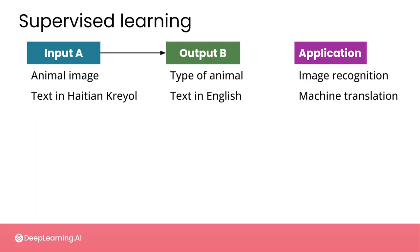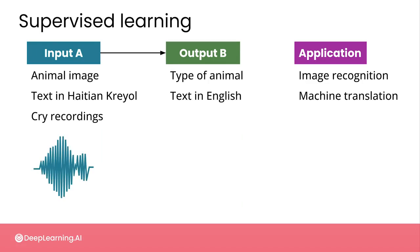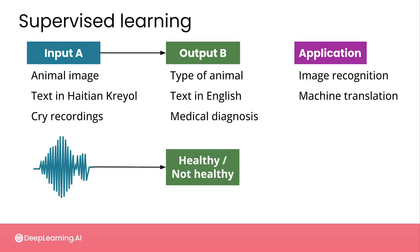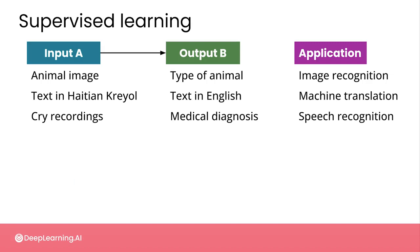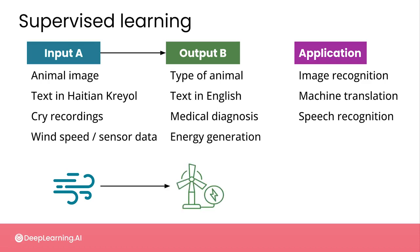Like you saw in the project spotlight video, the input could be a recording of the cry of a baby and the output could be a medical diagnosis. This is actually an example quite similar to speech recognition — the same kind of application running on your smartphone or smart device when you speak to it and ask for restaurant recommendations or a weather forecast. In one of the case studies in this course on renewable energy, you'll see the mapping of input A — predicted wind speed and turbine sensor measurements — to an output B that is energy generated from a wind turbine. This is an example of prediction based on historical data.